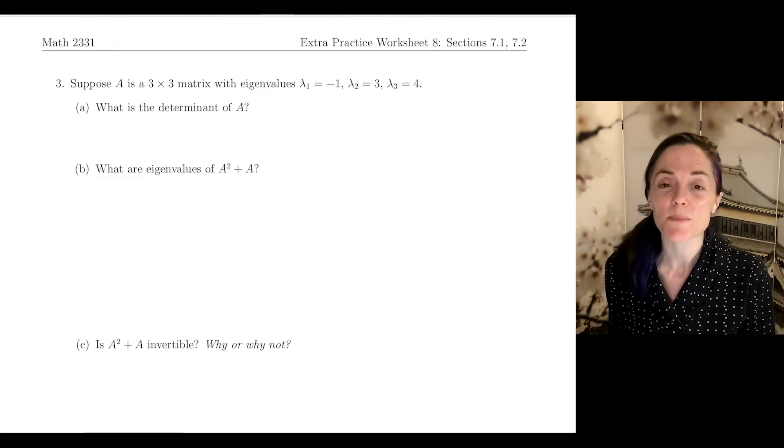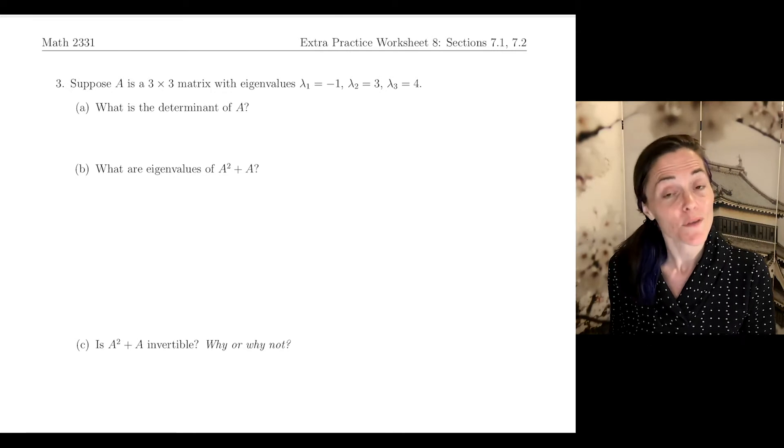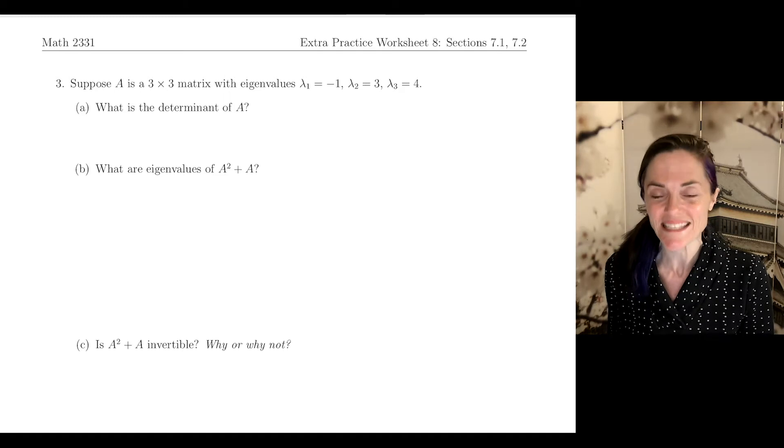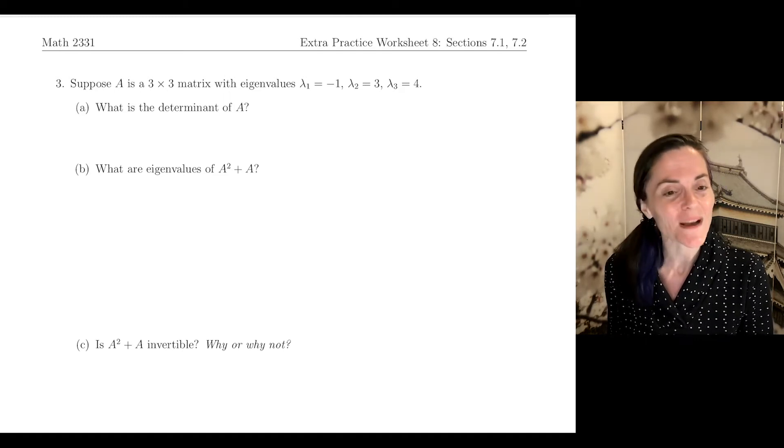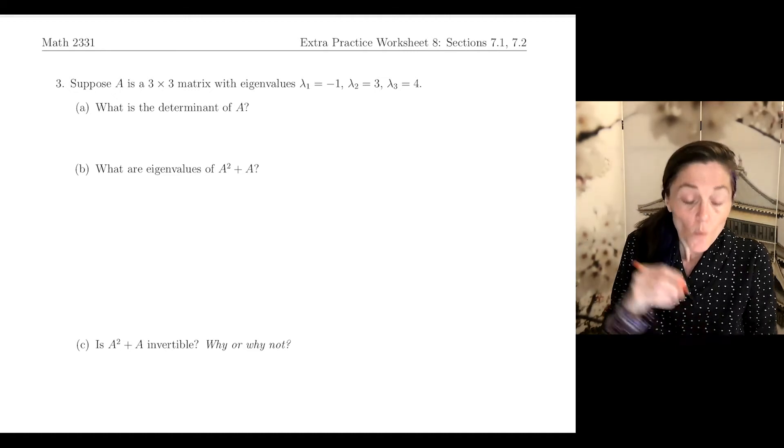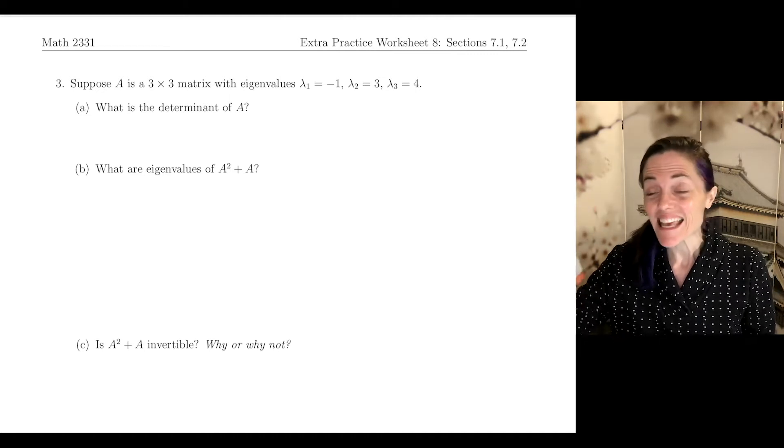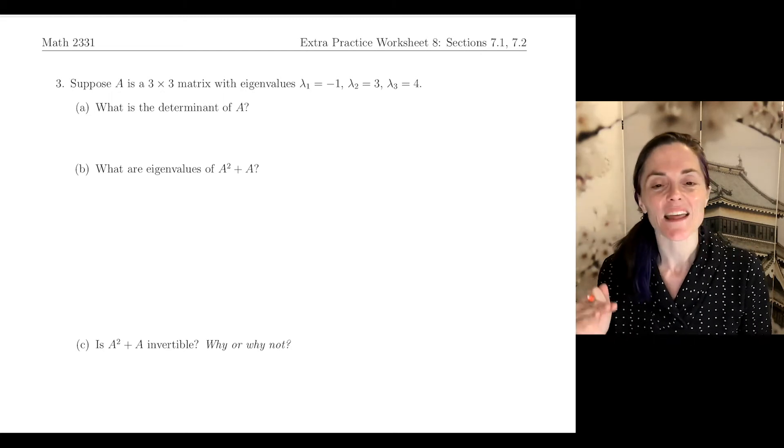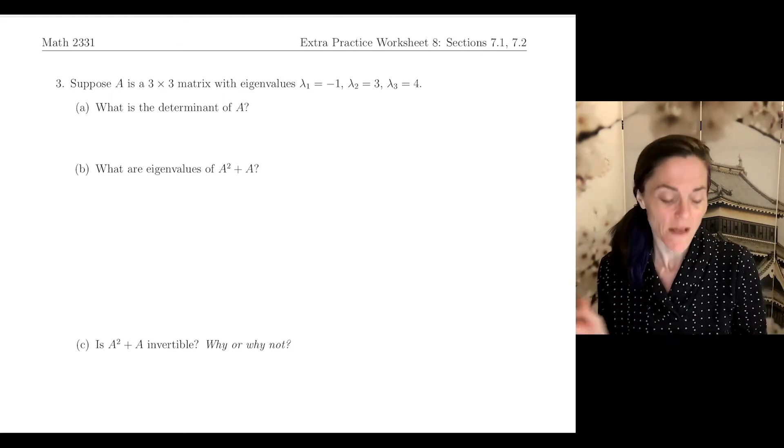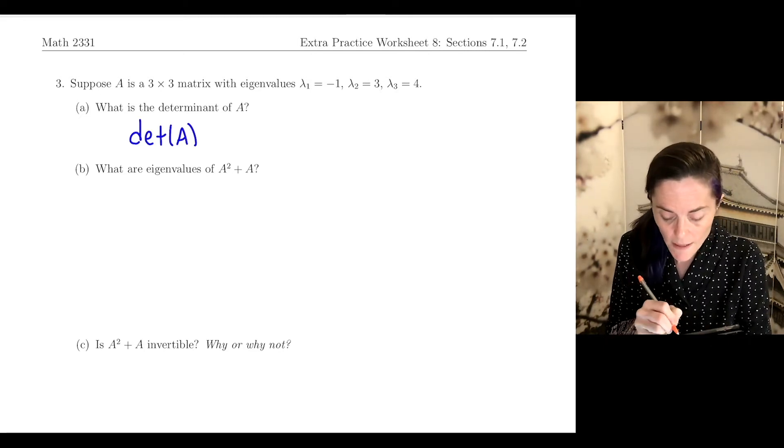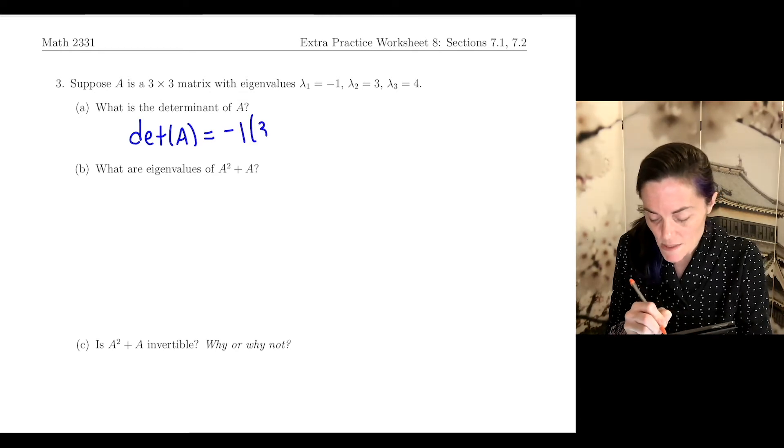Number three: suppose A is a three-by-three matrix with three distinct eigenvalues: lambda one is negative one, lambda two is three, and lambda three is four. First question: what is the determinant of A? When we have an n-by-n matrix with n eigenvalues up to algebraic multiplicity, the determinant is just the product of the eigenvalues. So the determinant of A here is minus one times three times four, which is negative 12.